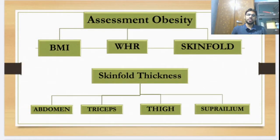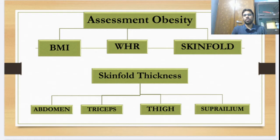The first is BMI, which stands for Body Mass Index — everyone knows this one. The second is WHR, which means Waist-Hip Ratio, and the third one is Skinfold. These are the 3 basic methods which will help to check the obesity level or overweight category in your body.